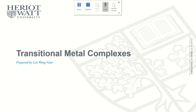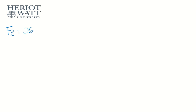This topic is about transition metal complexes. Transition metals, or transition elements, are known as d-block elements from the periodic table. We call them d-block elements because their electronic configurations involve 3d orbitals. For example, iron (Fe) has proton number 26, with configuration [Ar] 4s2 3d6. Because it involves 3d, we call it a d-block element.